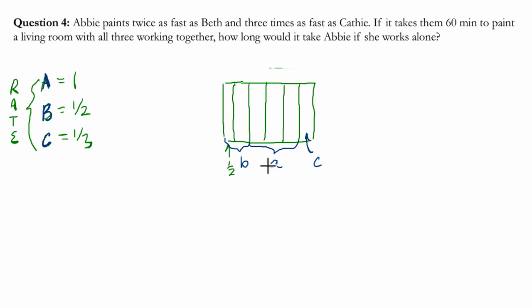That tells you that Abby paints, out of this model, she would paint six out of eleven pieces, that's her rate. Kathy would paint two out of eleven. And Beth would paint one and a half doubled, three out of elevenths.